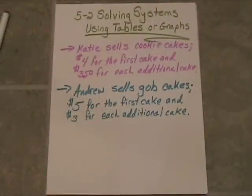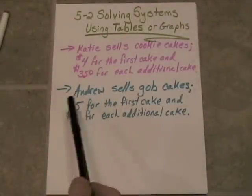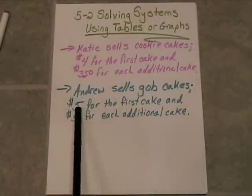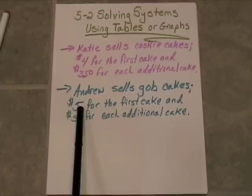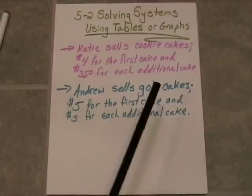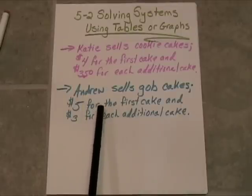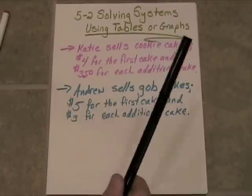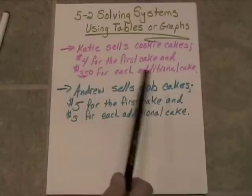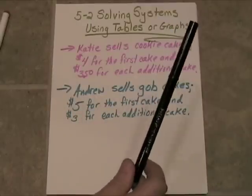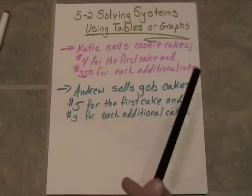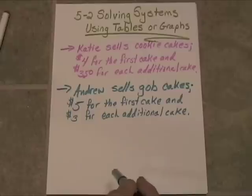Now, Andrew is hoping to outsell Katie with his marketing scheme here. A little bit more expensive for the first one, but every one thereafter is $0.50 cheaper. So, if you buy enough of these, his is going to really be the better deal. The question is, is there ever a point here where they're going to charge exactly the same for a certain amount of cake?